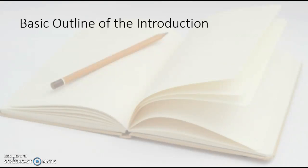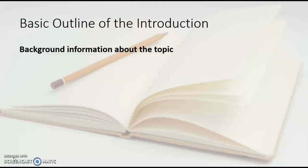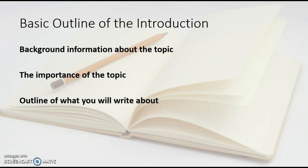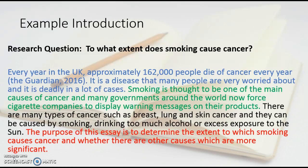A basic outline for an introduction would look something like this: background information about the topic, something interesting about the topic which will grab your reader's attention, the importance of the topic nowadays, an outline of what you're going to write about, and then a thesis statement which will include the research question. So my example paragraph will be shown here.